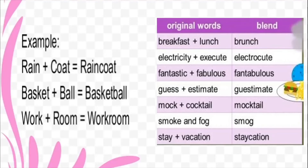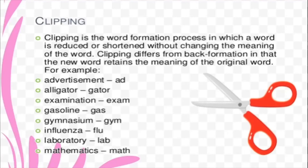We have done two vocabulary exercises — reduplication and blending. Now let us move on to the third one: clipping. As you can see in the image, you can see scissors — with scissors you clip things, you cut. Clipping in vocabulary also means cutting, shortening, or reducing. Clipping is the word formation process in which a word is reduced or shortened without changing the meaning of the word. You take away letters from words but you retain the meaning.